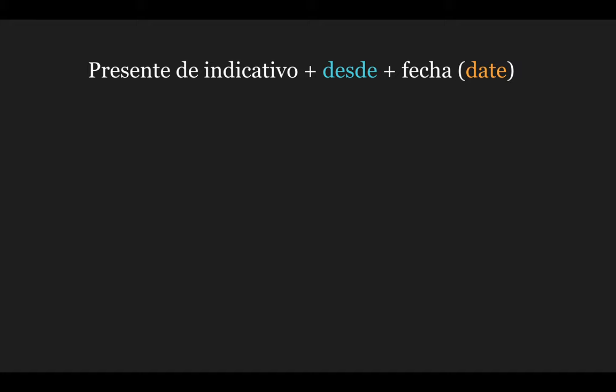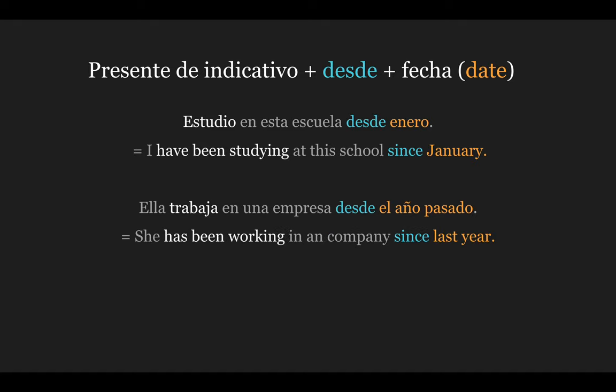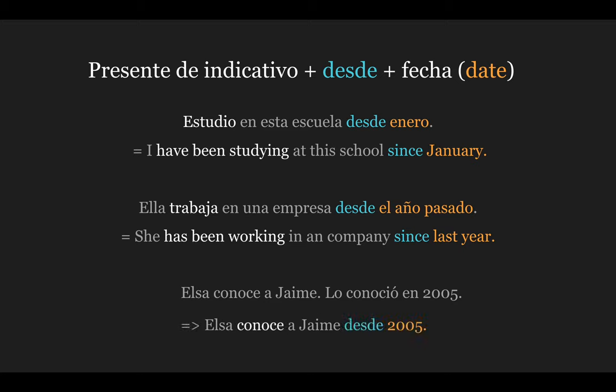The first formula goes like this: presente de indicativo + desde + fecha (or date). For example: Estudio en esta escuela desde enero — this means 'I have been studying at this school since January.' Another example: Ella trabaja en una empresa desde el año pasado — 'She has been working in a company since last year.' These two sentences can also be joined into one: Elsa conoce a Jaime, lo conoció en dos mil y cinco — meaning Elsa got to know Jaime in 2005 — which becomes: Elsa conoce a Jaime desde dos mil y cinco.